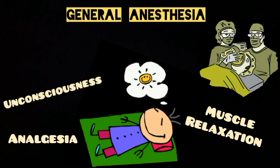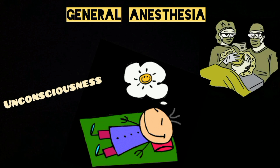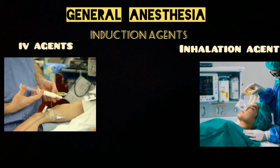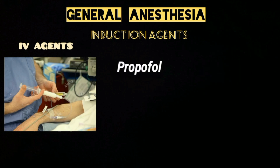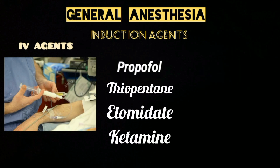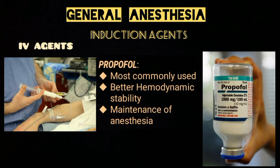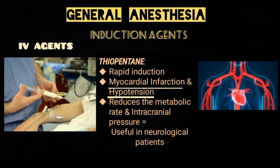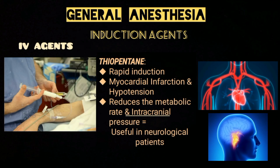General anesthesia can be administered by an intravenous agent or an inhalation agent. Commonly used IV agents include propofol, thiopentone, etomidate, and ketamine. Propofol is the most commonly used because it provides better hemodynamic stability and can also be used for maintenance by continuous infusion. Thiopentone provides rapid induction but can cause myocardial depression and hypotension.